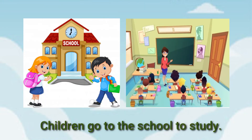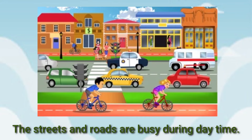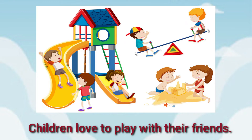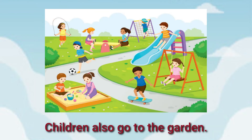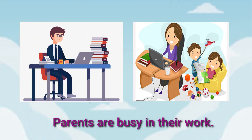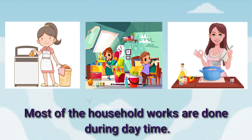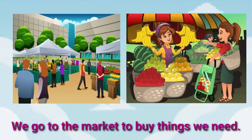Children go to school to study. The streets and roads are busy during daytime. Children love to play with their friends and also go to the garden. Parents are busy in their work. Most of the household work is done during daytime, and we go to the market to buy things we need.